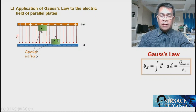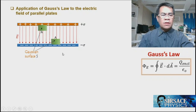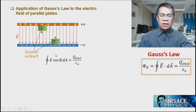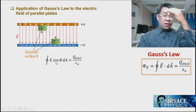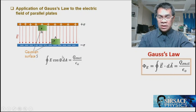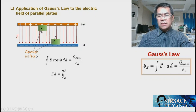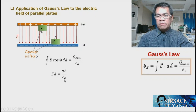Since the surfaces are symmetric, the flux on each is the same. Using Gauss's Law: E·cos(θ)·dA = q_encl / ε₀, which simplifies to E·A = q_encl / ε₀. We can use either surface since they are the same. So EA = σA / ε₀, where σ is the surface charge density.